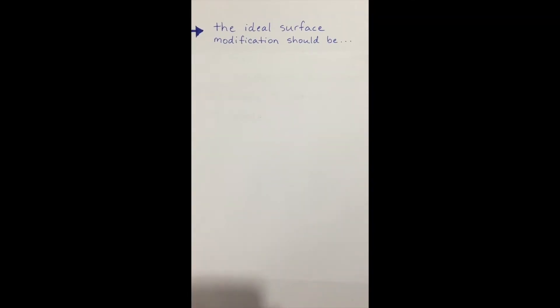So, let's talk about an ideal surface modification now. An ideal modification would meet the following four requirements. One, the added layer should be thin. This would allow the modification to have a minimal effect on bulk properties. Two, the modification should be resistant to delamination.